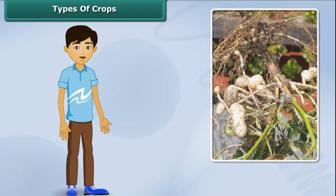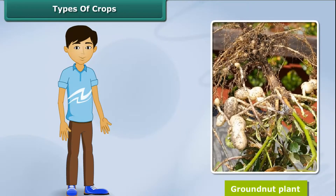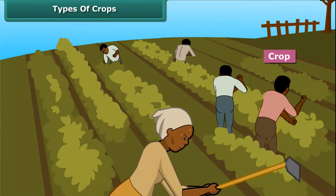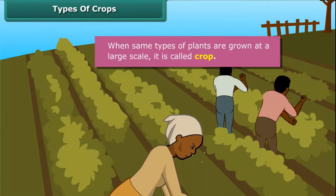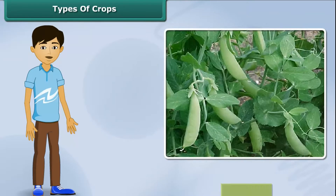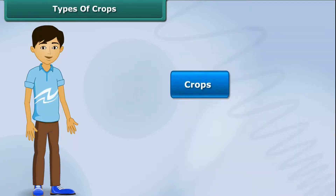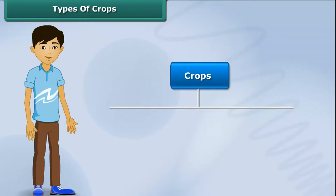Friends, have you ever looked at a groundnut plant? Can we call it a crop? No, we cannot. When the same types of plants are grown at a large scale, then it is called a crop. If you wish to grow a pea plant in the hot season, you can't do it. In India, crops are broadly classified into two categories on the basis of the season they are grown in — Rabi crops and Kharif crops.